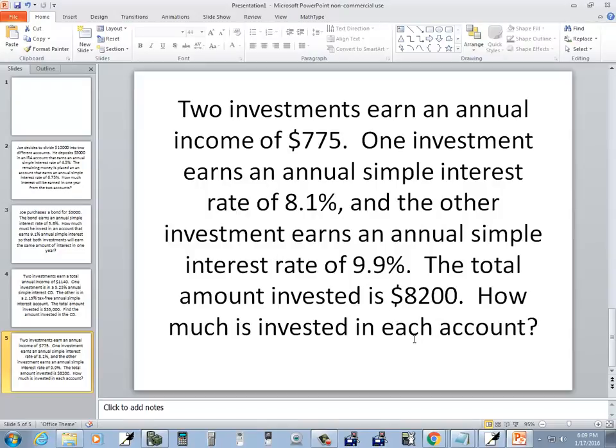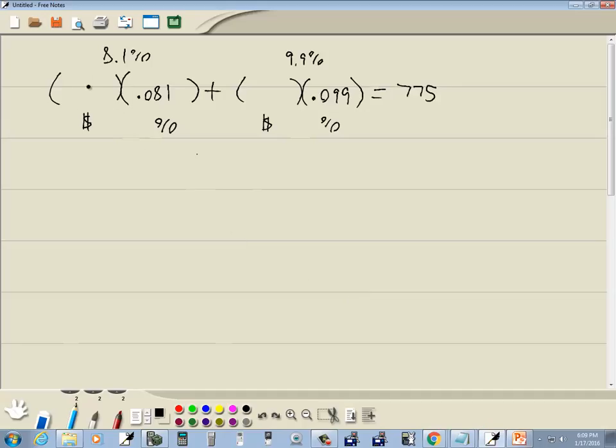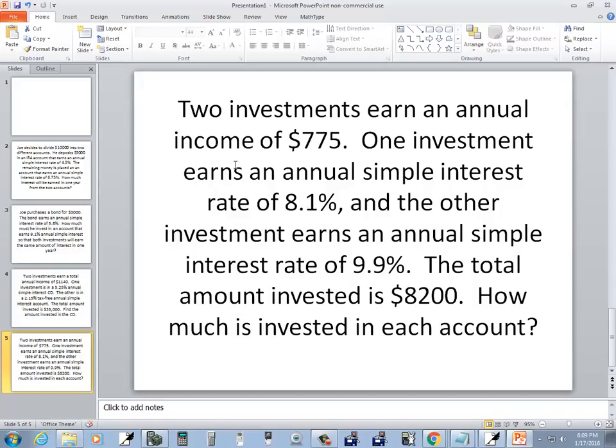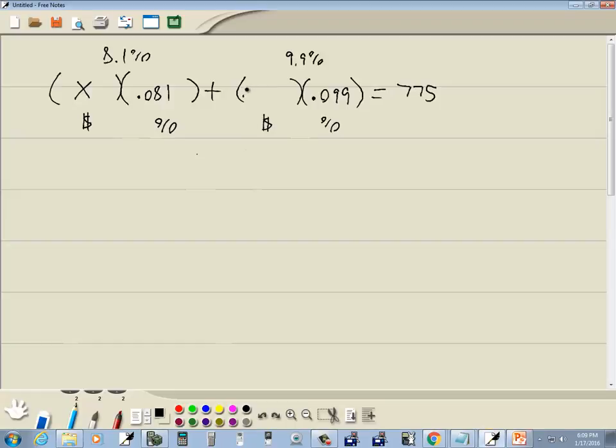It says how much is invested in each account? Well, I'm going to put X in one of these. And they say there's a total of $8200. So this one's going to be 8200 minus X. It's always that way. If you're not given these two amounts, one of them will be X, one of them will be your total minus X.